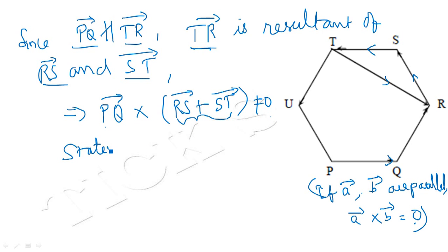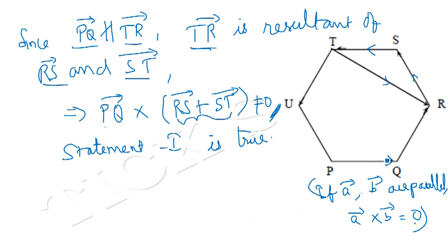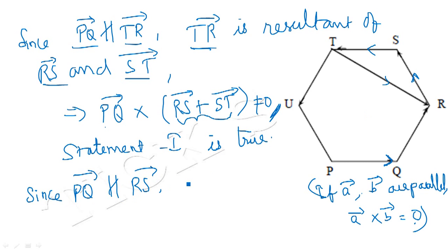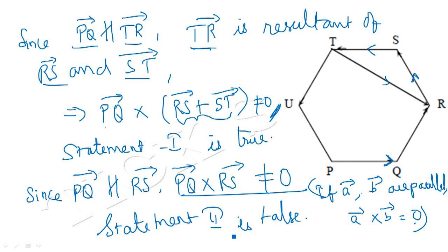Hence Statement 1 is true. Now for Statement 2, we have PQ vector cross RS vector equal to 0. But from the diagram, PQ vector is not parallel to RS vector. Since they are not parallel, their cross product will not equal zero — so PQ vector cross RS vector is not equal to 0. This means Statement 2 is false, because Statement 2 claimed PQ cross RS equals 0.